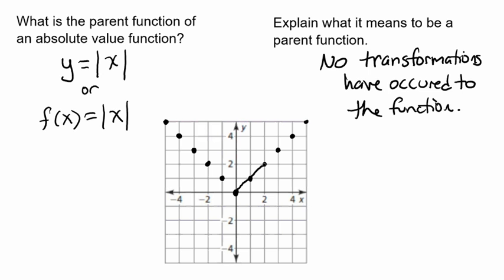And then there's a line that connects them. Notice that this creates a type of a V, and so this is what the parent function of the absolute value function looks like.